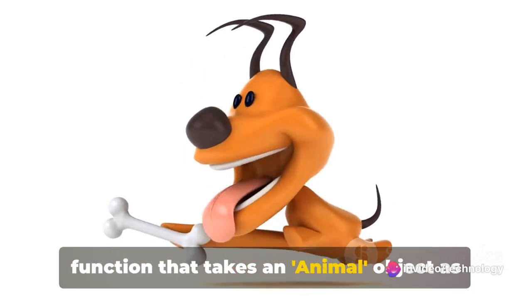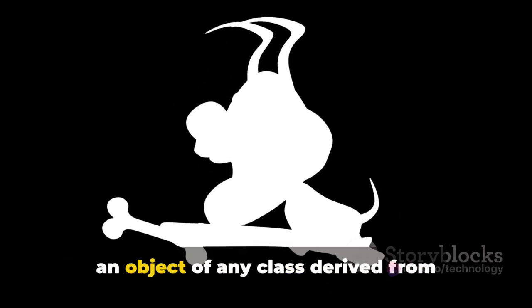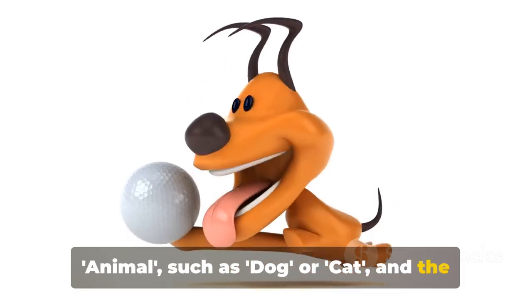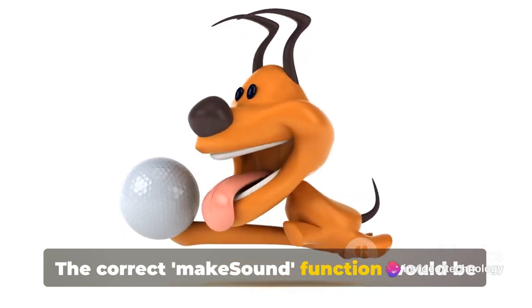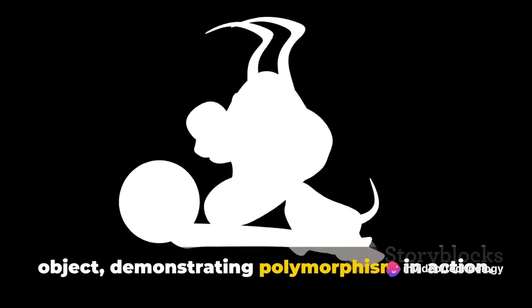In the context of programming, consider a function that takes an animal object as a parameter. Thanks to polymorphism, we could pass in an object of any class derived from animal, such as dog or cat, and the function would work perfectly fine. The correct MakeSound function would be called depending on the actual type of the object, demonstrating polymorphism in action.